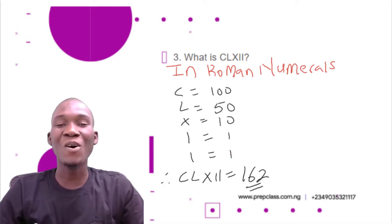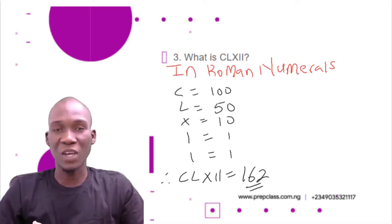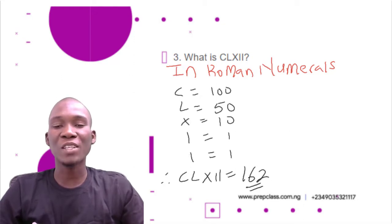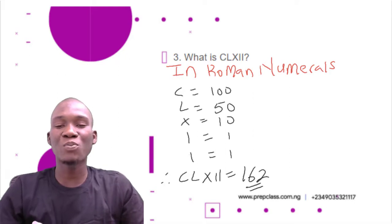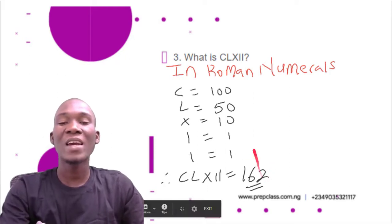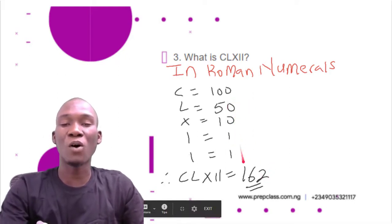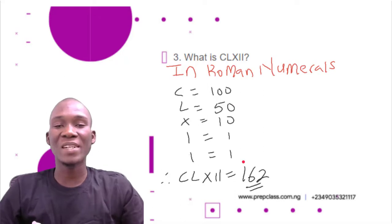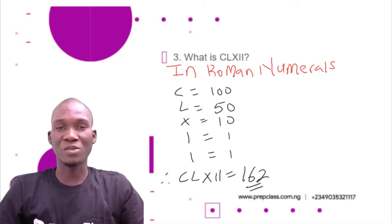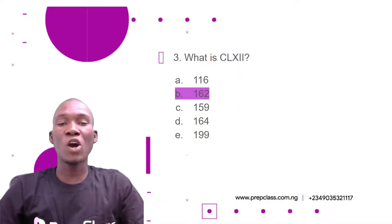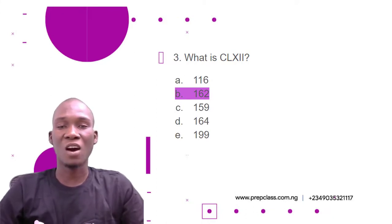You can see how simple it is to convert from Roman numerals into figures. The same applies when converting from figures into Roman numerals — you break the number down into components of these forms. From the options, the correct answer is option B: 162.